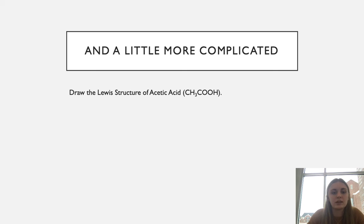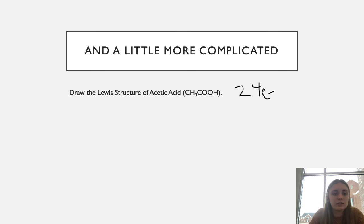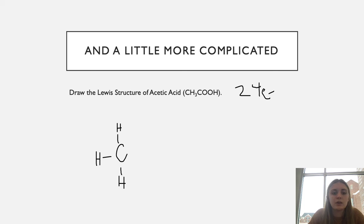Now let's do a more complicated Lewis structure — acetic acid. There are 24 valence electrons total: four for each carbon, one for each hydrogen, and six for each oxygen. We start by placing our first carbon and connecting the three hydrogens next to it with single bonds. All of those hydrogens now have full octets and can't accept any more bonds.